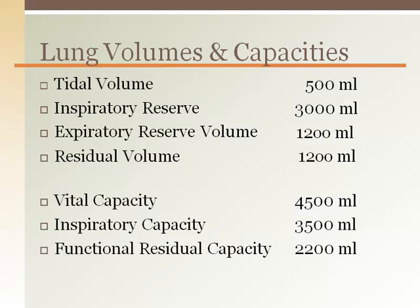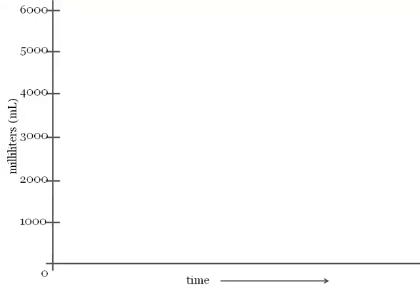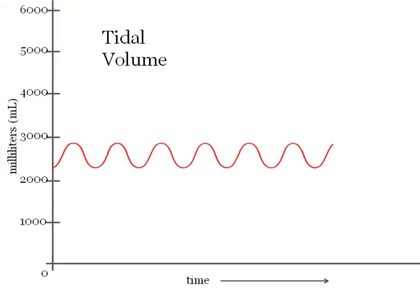Capacities are made up of one or more volumes. Let's look at these volumes and capacities on a chart as if a patient was breathing into the spirometer. The amount of air that is inhaled or exhaled during a normal or regular breath is called tidal volume. It is about 500 milliliters.